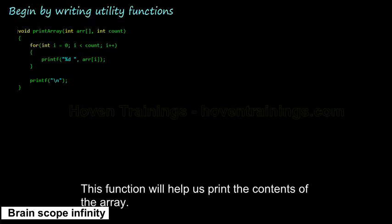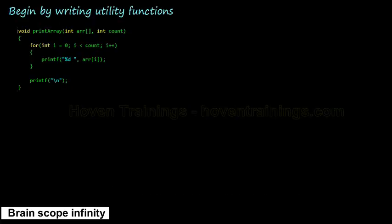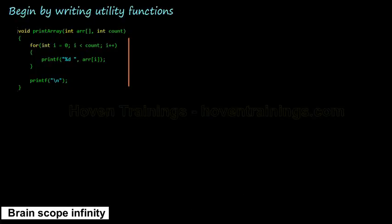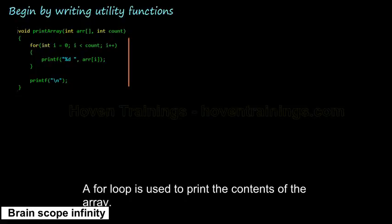Let's begin by writing two utility functions to help us. This function will help us print the contents of the array. The array to be printed and the number of elements are the parameters. A for loop is used to print the contents of the array.